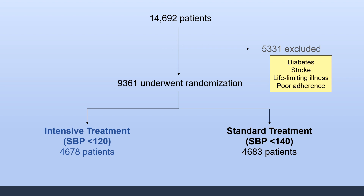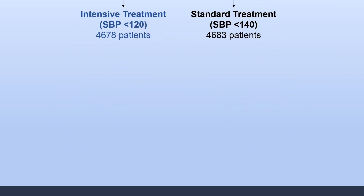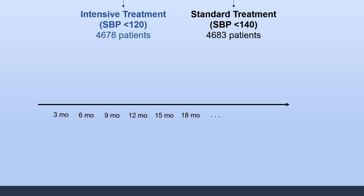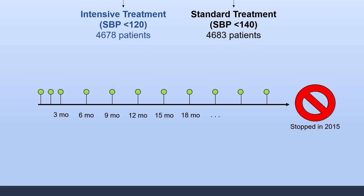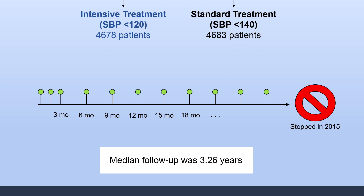Patients who underwent randomization were separated equally into an intensive treatment group with a target systolic blood pressure of less than 120, and a standard treatment group with a target systolic blood pressure of less than 140. This was a five-year study; patients were seen monthly for the first three months and then every three months afterward to ensure they were hitting their blood pressure target and medications were adjusted accordingly. Interestingly, the study was stopped early in 2015 when the intensive treatment group showed significant superiority, with a median follow-up of 3.26 years.